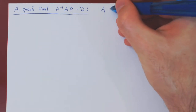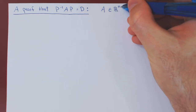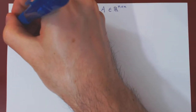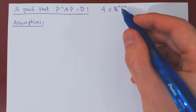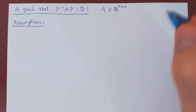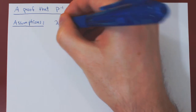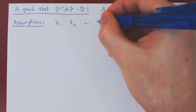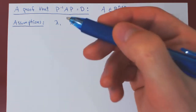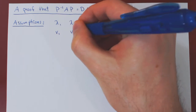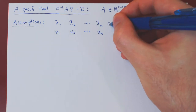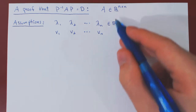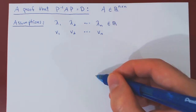We assume here that A is some n by n matrix. We assume that we have found the n eigenvalues of A: lambda 1, lambda 2, up to lambda n. And for each eigenvalue, we have found a corresponding eigenvector, say v1, v2, up to vn. The eigenvalues are simply real numbers.